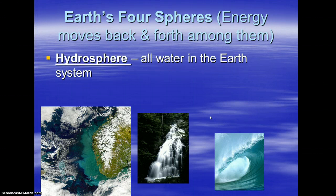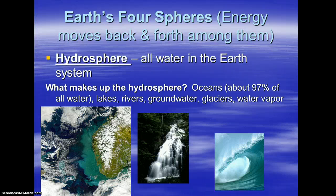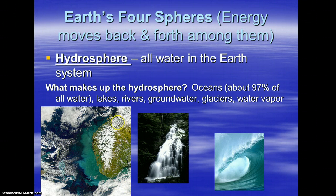Another sphere is the hydrosphere — hydro means water, so that's all the water in our Earth system. We have the oceans, which make up about 97% of all the water. We have lakes, rivers, groundwater, glaciers, and water vapor. You need to know that the oceans host most of the water on this planet. I love this satellite image because it shows many different versions of our water cycle — mountain areas with snow caps, river tributaries draining into the ocean, and clouds, all part of the hydrosphere.